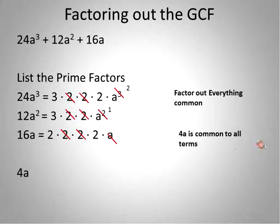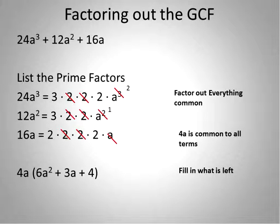We factor out the greatest common factor — the prime factors common to every single term. We factor out 4a and fill in what's left. For the first term, 24a to the power of 3, we're left with 3 times 2 times a squared, which gives us 6a squared. For the second term, 12a squared, we're left with 3 times a, which is 3a. And for the third term, 16a, after factoring out 4a, we're left with 2 times 2, which is 4. That's how you factor out the greatest common factor from a trinomial.